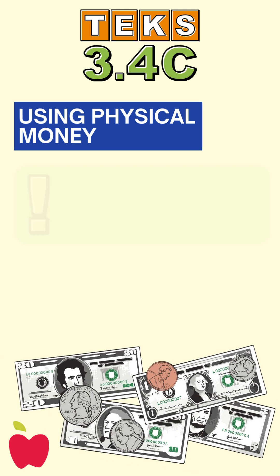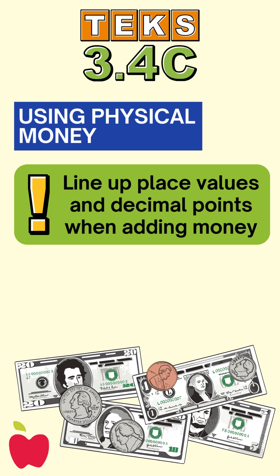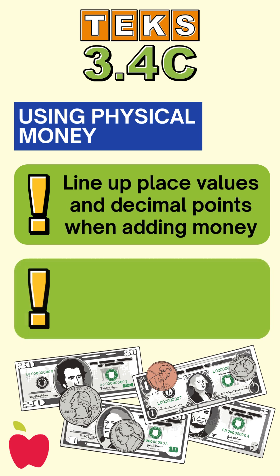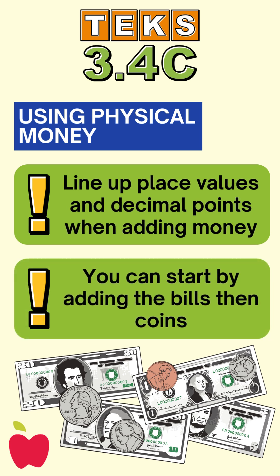So remember, when you're figuring out the value of your coins and bills, it's important to line up the decimal points when adding them up. Start with the bigger bills, then add your coins, and always check if you have enough money to buy what you need.